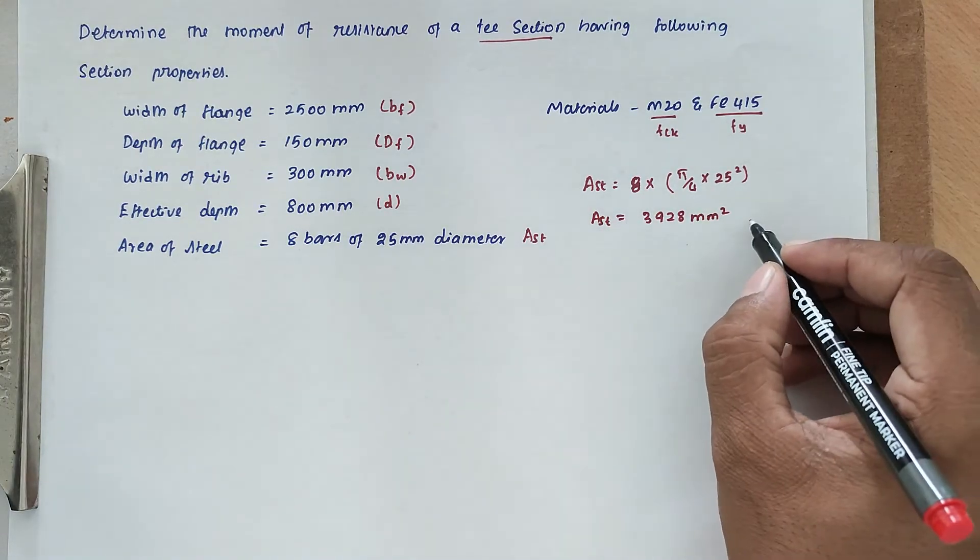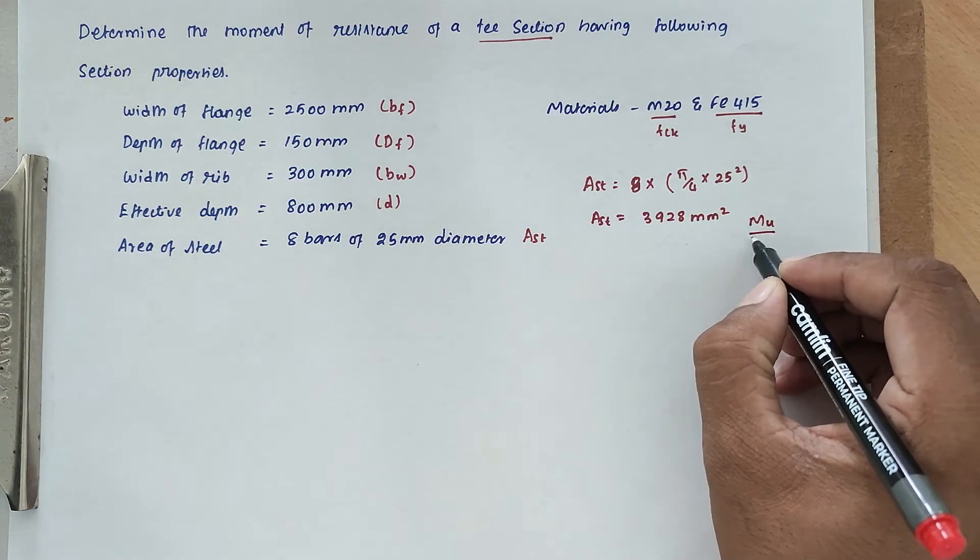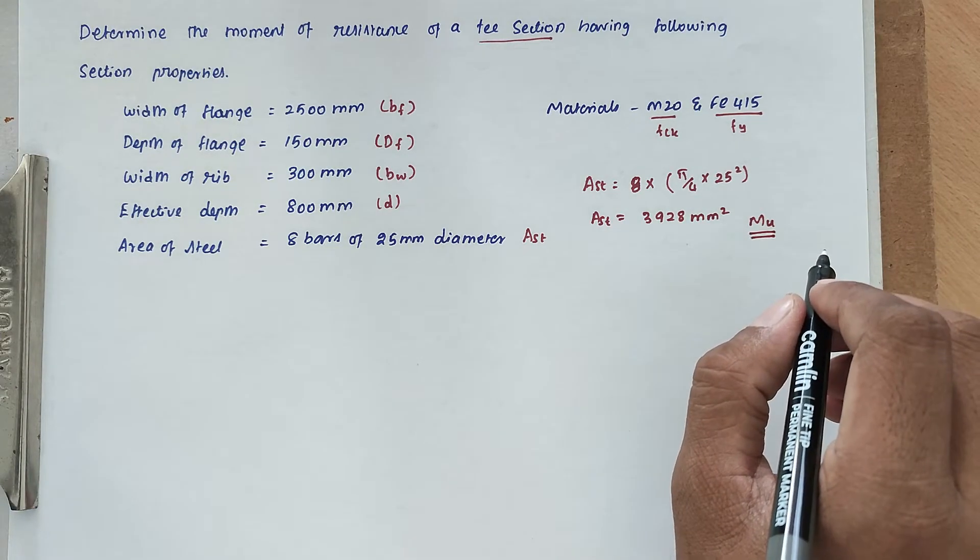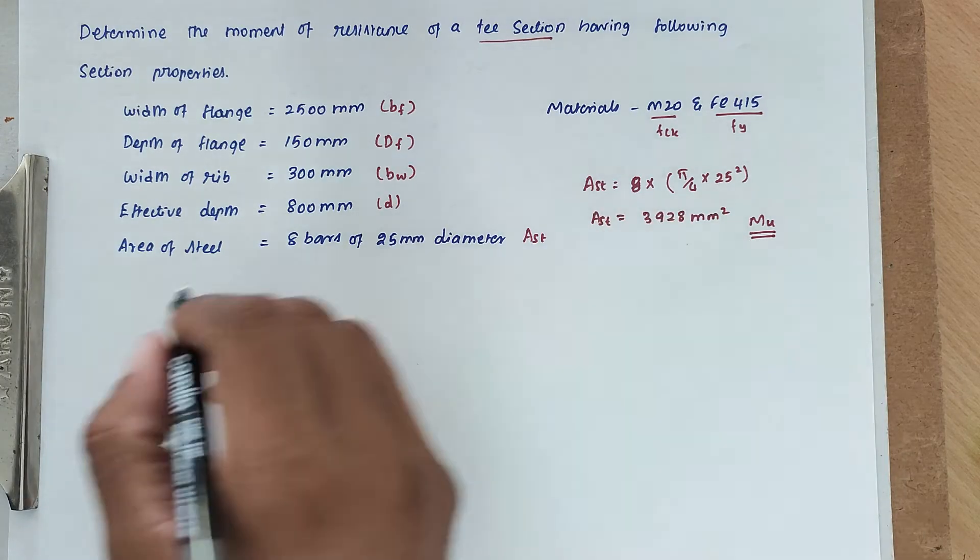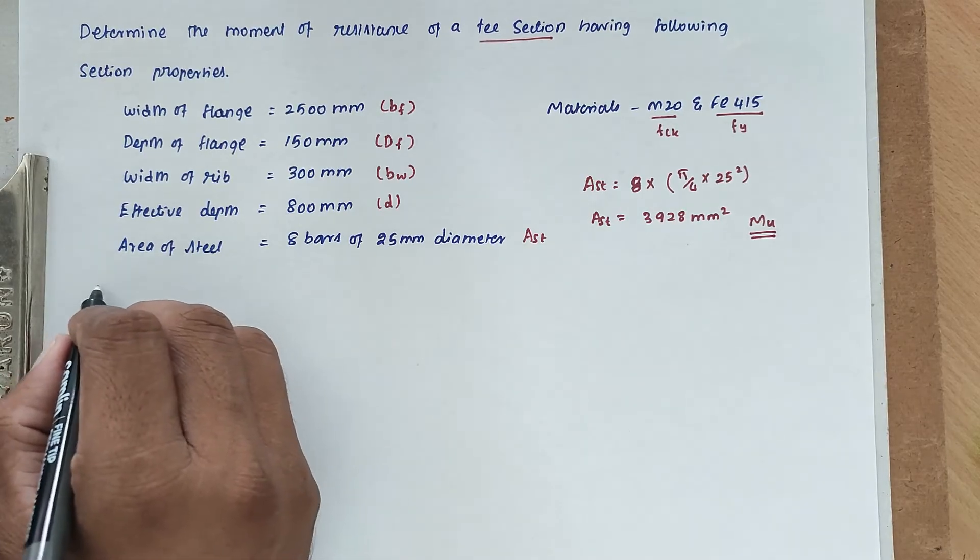We have to find out the moment of resistance, that is MU value. Before that we have to find out whether the section is under-reinforced or over-reinforced. So first thing is depth of neutral axis.